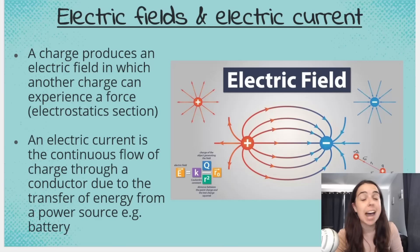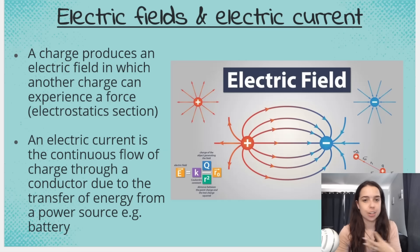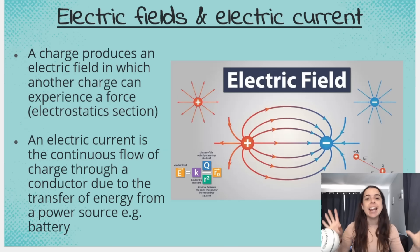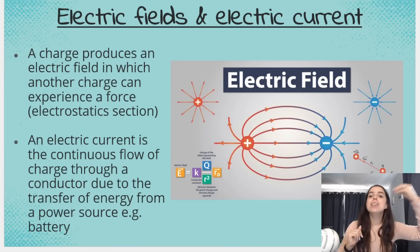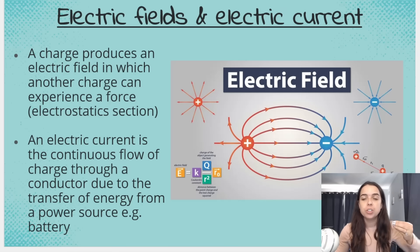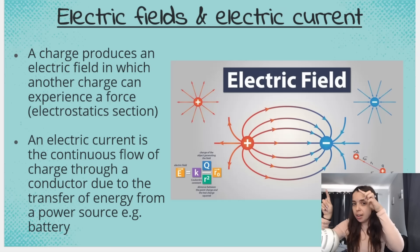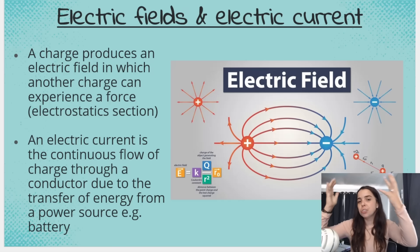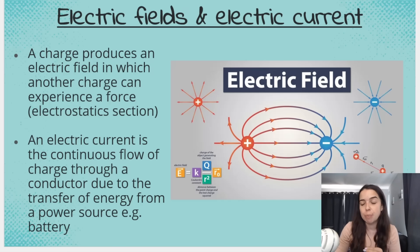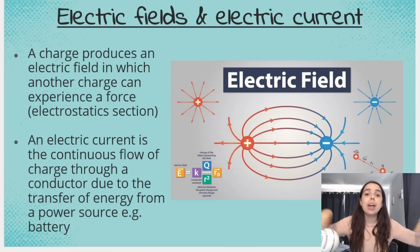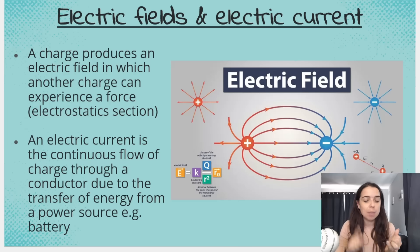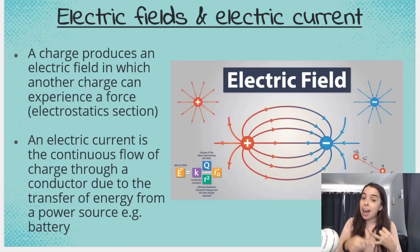Something else we learned in grade 10 and 11 is electric fields. A charged object, like a charged sphere, produces an electric field in which another charge can experience a force. You should also know that an electric current is the flow of charge through a conductor. So we've recapped magnetic field, electric field, and electric current — the interaction between all of this gives us electromagnetism.